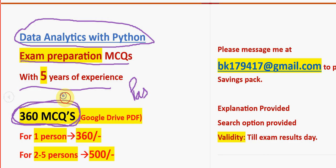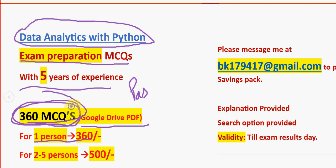You are going to get these in a Google Drive PDF restricted link. The price is 360 rupees for one person. If you take it along with your friends or classmates — for two to five persons combined — you can get it for just 500 rupees only. So please share this with your friends and classmates.